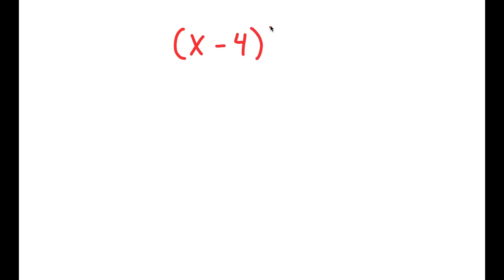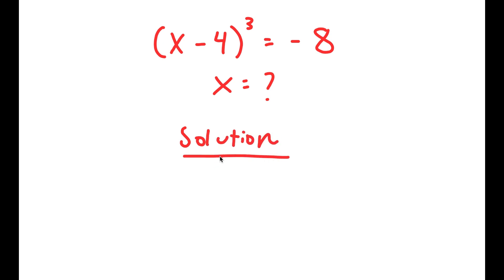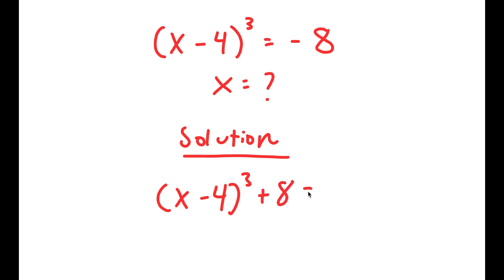For this equation, I have x minus 4 to the power of 3 is equal to negative 8. The variable we're solving for is x. The first step to solving this equation is to add 8 on both sides. So if I add 8 on both sides, I get x minus 4 to the power of 3 plus 8 is equal to 0.